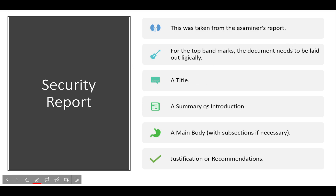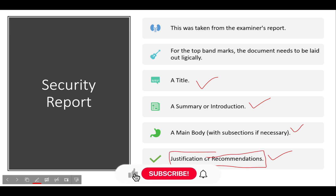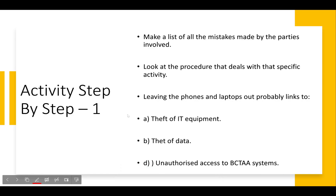From the examiner's report, for the top band mark, the document needs to be laid out logically: a title describing what you're speaking about, a summary or introduction of the overarching problems faced, a main body with subsections, and justifications and recommendations at the very end. You recommend something and then justify why you recommended it.